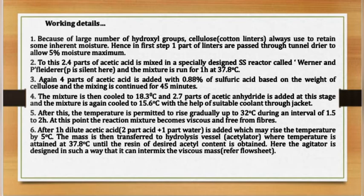Step two: 2.4 parts of acetic acid is mixed in a specially designed stainless steel reactor and the mixture is run for 1 hour at 37.8 degrees Celsius. Step three: 4 parts of acetic acid is added with 0.88% sulfuric acid based on the weight of cellulose, and the mixing is continued for 45 minutes.